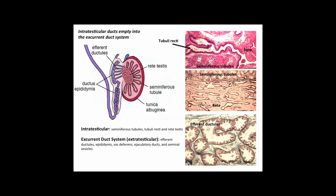The excurrent duct system consists of the extra-testicular ducts: the efferent ductules, the epididymis, the vas deferens, the ejaculatory ducts, and the seminal vesicles. Histological images show profiles of tubuli recti with associated seminiferous tubules, a profile of the rete testis, and some of the efferent ductules.